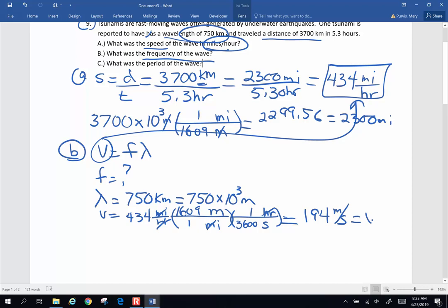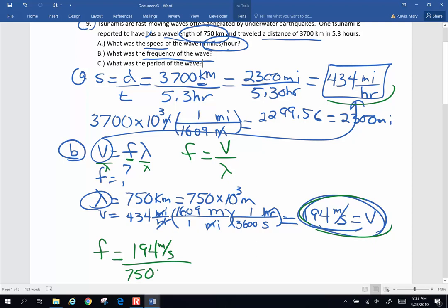Now I've got velocity, I have wavelength, I can solve for frequency. So my frequency is going to be, let's do some algebra. We're solving for frequency. Frequency is going to be velocity divided by wavelength. I'm going to divide both sides by wavelength. So frequency is going to be my velocity, which is 194 meters per second, divided by my wavelength, 750 times 10 to the third meters. And so when I do that, I end up with 2.59 times 10 to the negative fourth hertz. Weird frequency, but that is what I get for frequency.